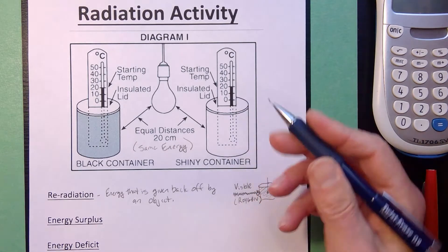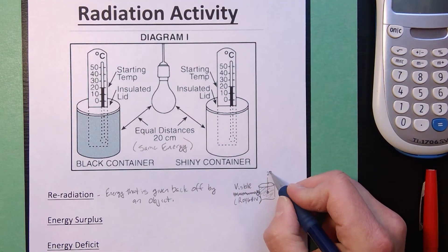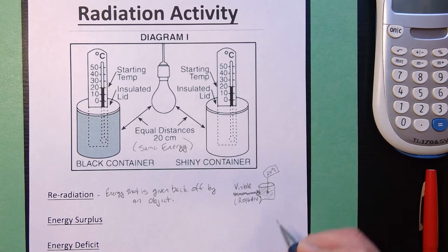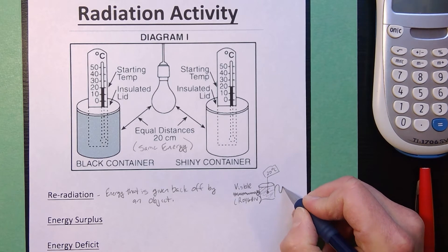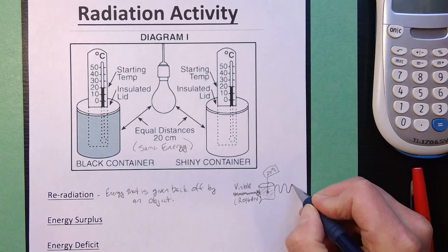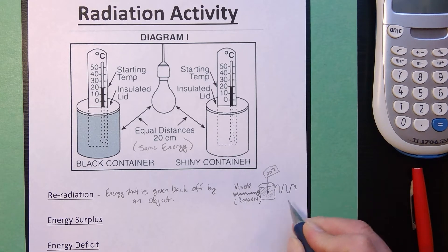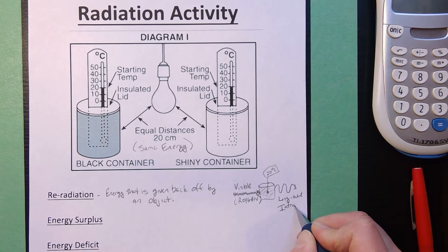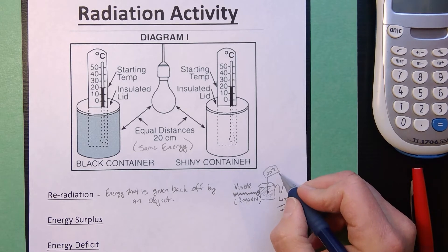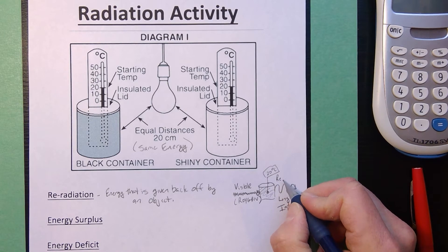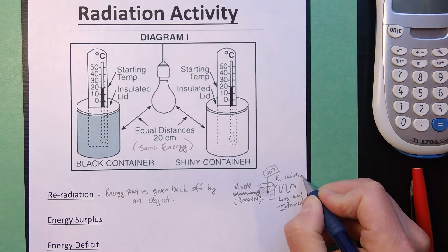It's coming from the light bulb, which is really hot. So it's able to radiate very shortwave visible light. Now, the can, which in the diagram is starting at 20 degrees Celsius. At 20 degrees Celsius, the object gives off energy, but the type of energy that it gives off is going to be long wave infrared. It's just not hot enough to give off visible light. So that energy, which is re-emitted, we're going to call the re-radiation.